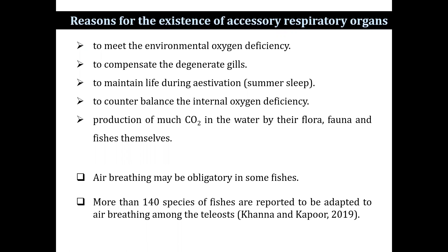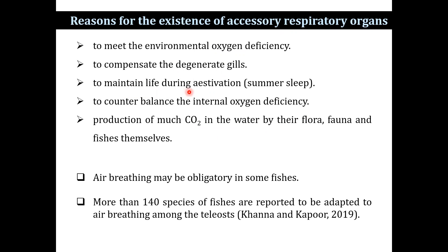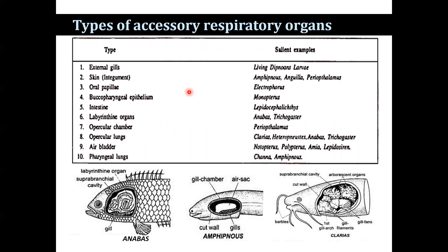The development of accessory respiratory organs is found mostly in freshwater fishes of tropical regions and very rarely in marine fishes. Several reasons have been suggested: to meet oxygen deficiency, to compensate for degenerate gills, to maintain life during aestivation period, to counterbalance internal oxygen deficiency, production of much carbon dioxide in water by flora, fauna, and fishes themselves, as well as causing formation of carbonic acid and aquatic toxins. Air breathing may be obligatory in some fishes. To overcome these adverse situations, several types of accessory respiratory organs functioning in aquatic or aerial environments have evolved. The development of such structures is essentially adaptive in nature. Some accessory organs serve aquatic respiration while others serve aerial respiration.